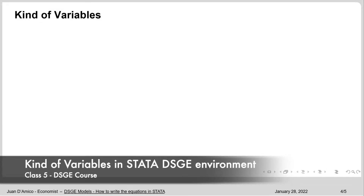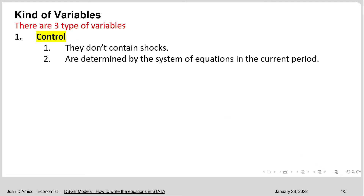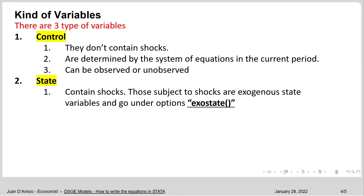Let's see what kinds of variables we have in Stata that we need to consider. There are three types of variables. The first one is what Stata calls control variables — this type of variable does not contain shocks and is determined by the system of equations in the current period. These variables can be observed or unobserved. Then we have state variables, which do contain shocks.